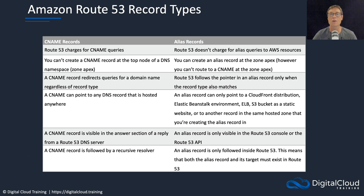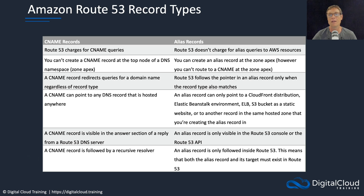With alias records, Route 53 does not charge for alias queries to AWS resources, but alias records are only supported for specific AWS resources. Importantly, you can create an alias record at the zone apex, but you cannot create a CNAME at the zone apex — that's one of the main differences you get tested on. So if you have the domain example.com, you could have an alias record for example.com pointing to a load balancer's DNS name, which then resolves to the IP addresses of the load balancer nodes.